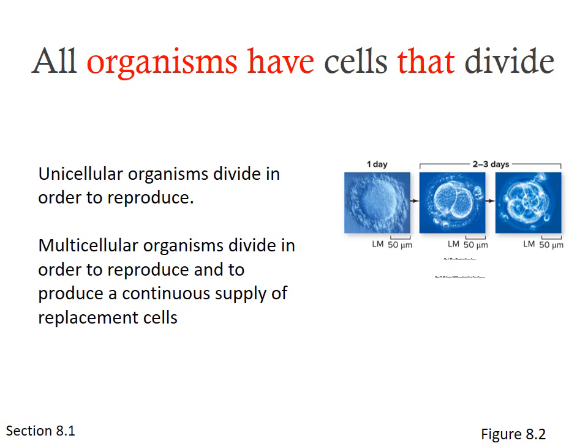All organisms have cells that divide — this is true for single-cellular and multicellular organisms alike. The difference is the purpose or reason those cells are dividing. When talking about a unicellular organism, they divide in order to reproduce. If you have one bacteria that becomes two cells, each of those cells will be its own organism.